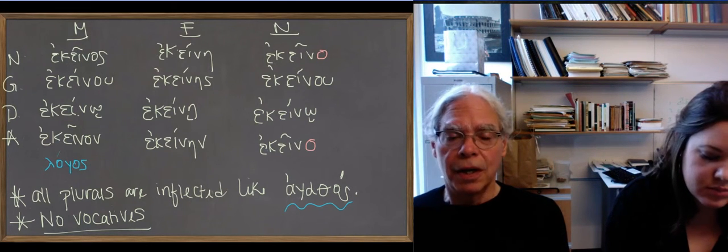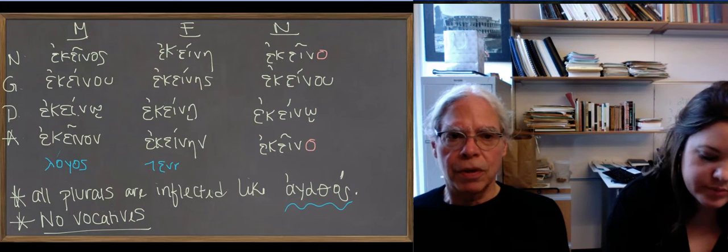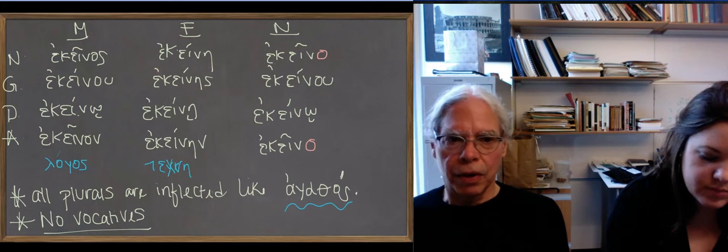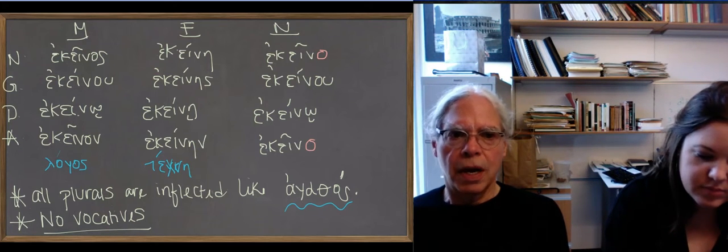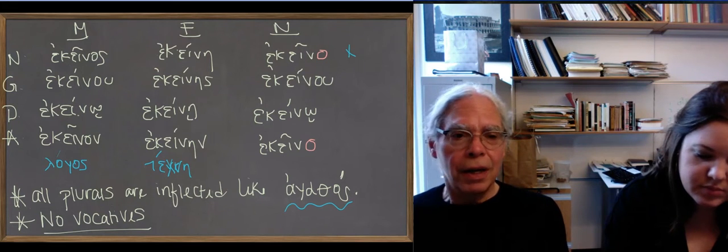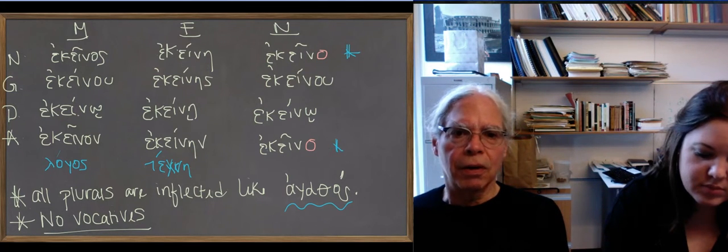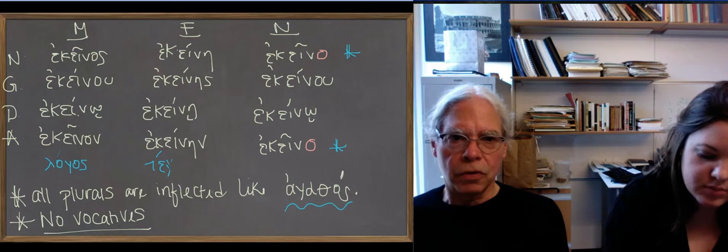The only thing that is different, however, is that you have what we see in the relative pronoun, hos, he, ha, in the neuter, and what we've seen in the definite article, ho, he, to.